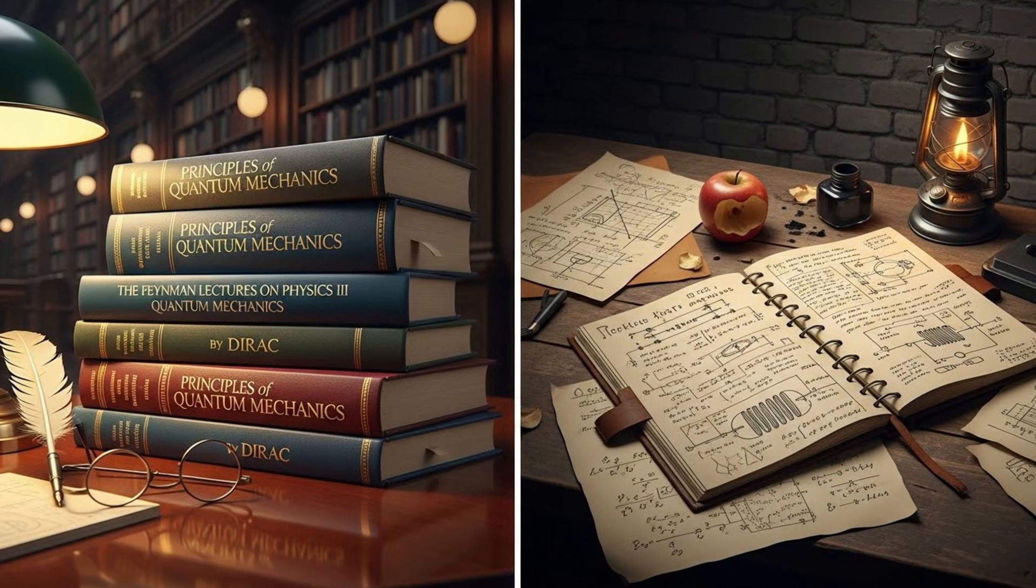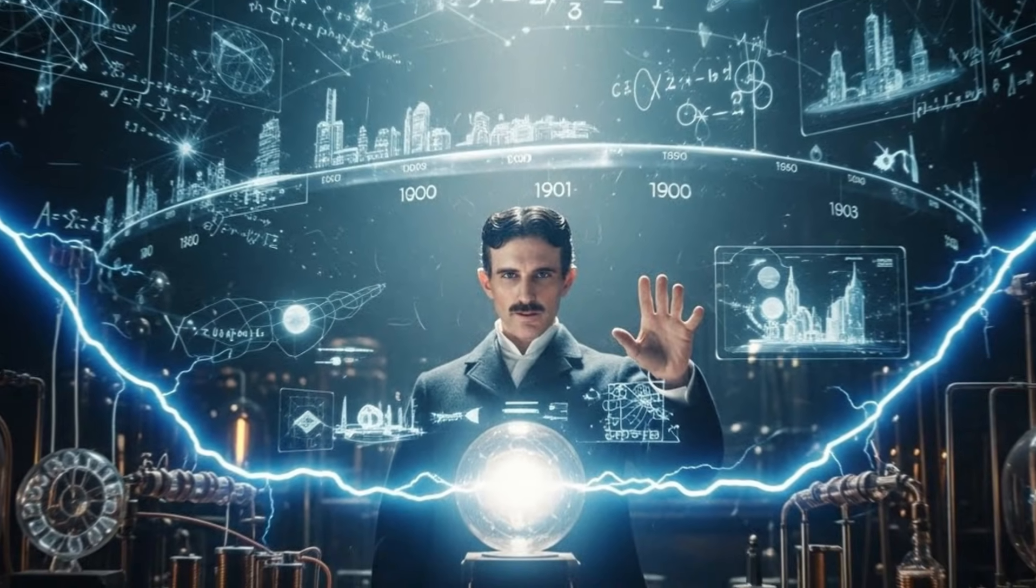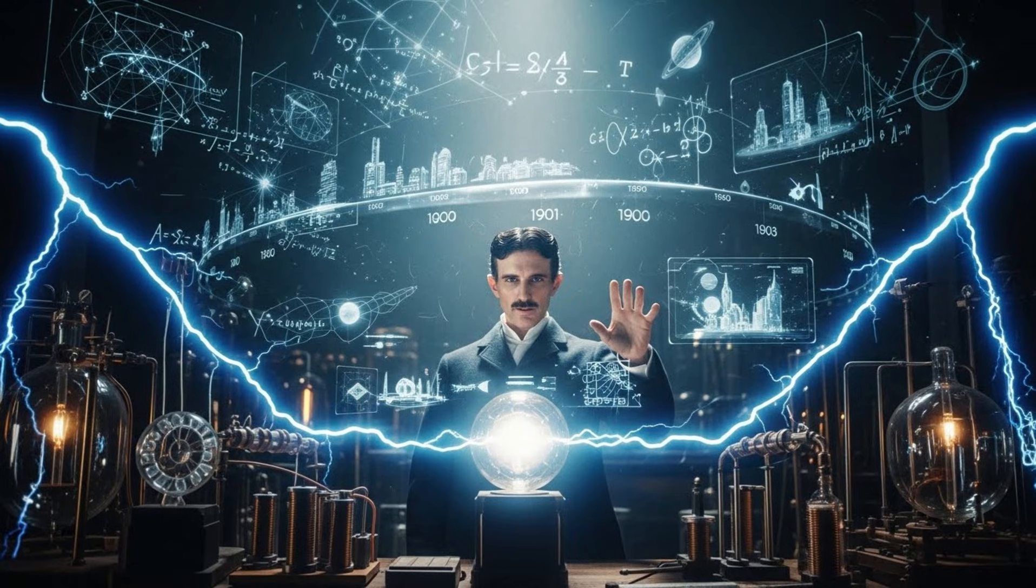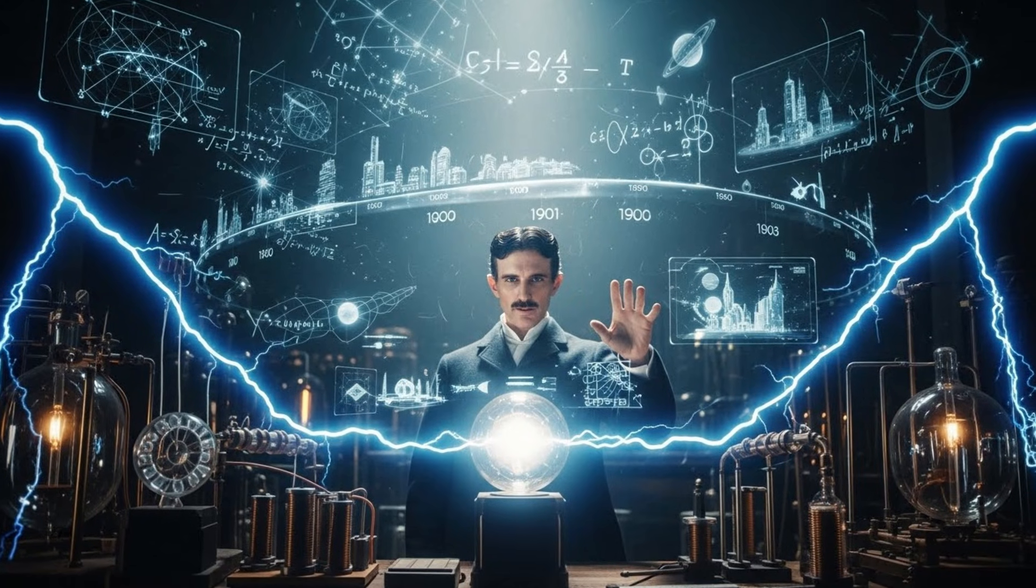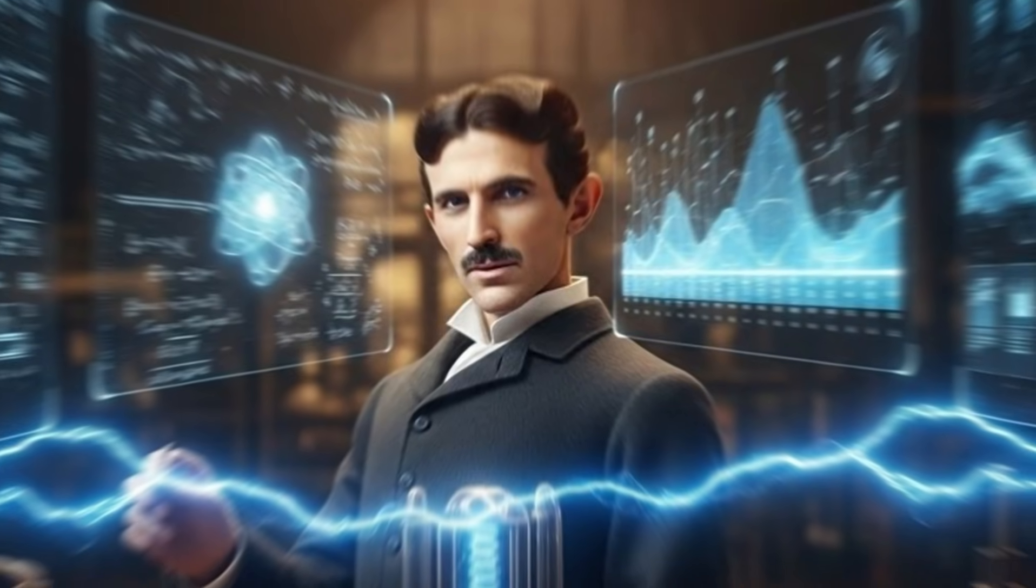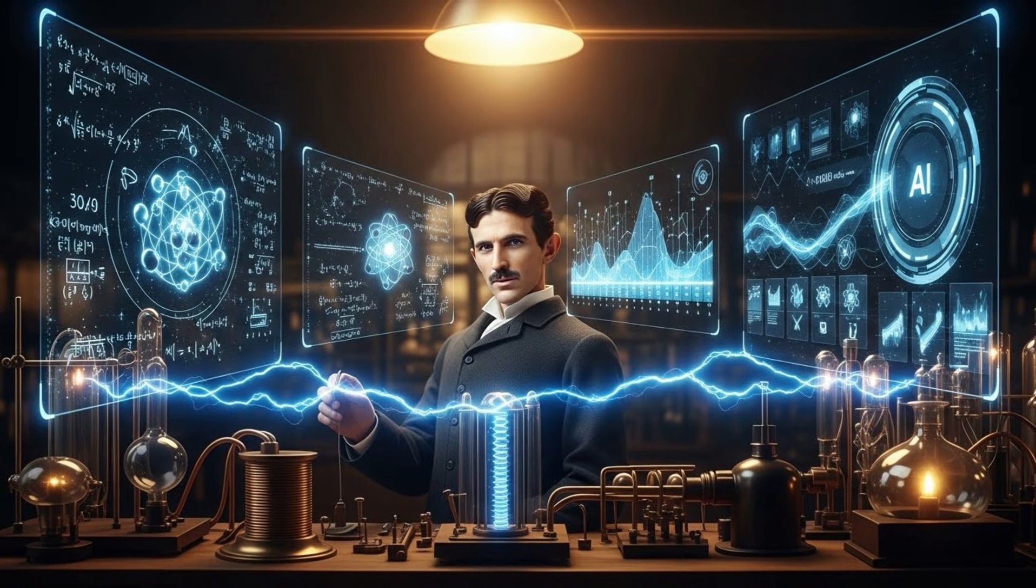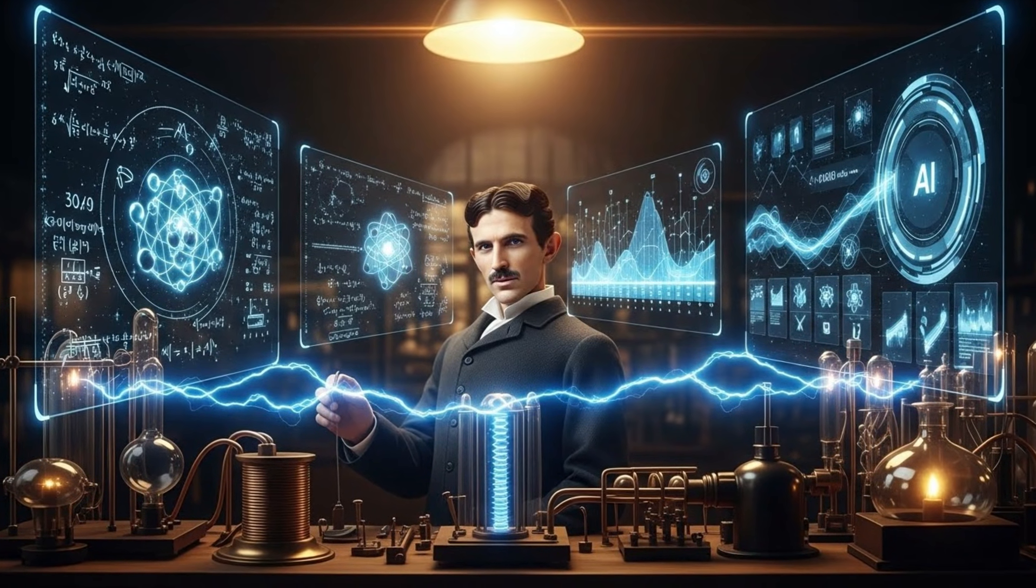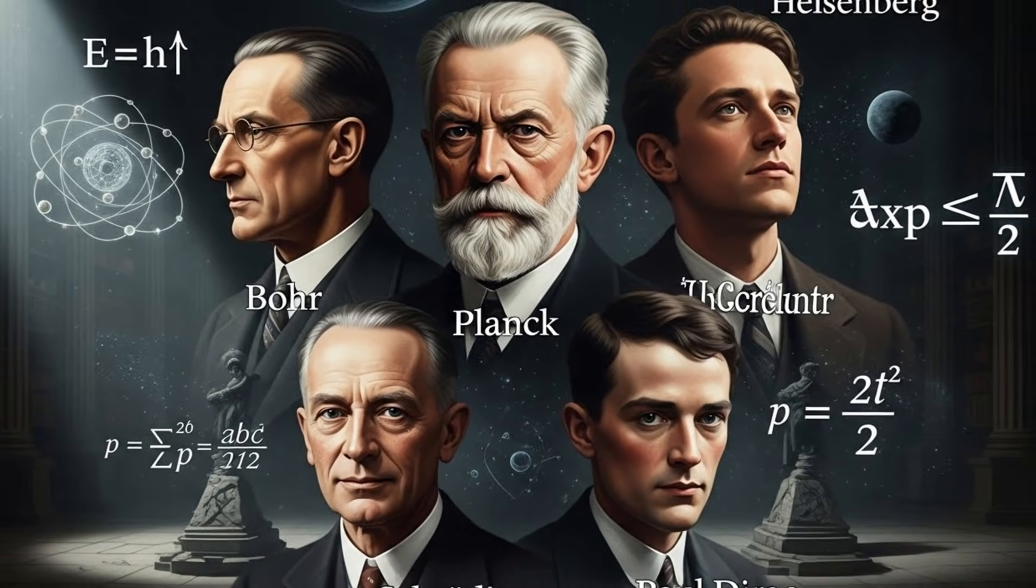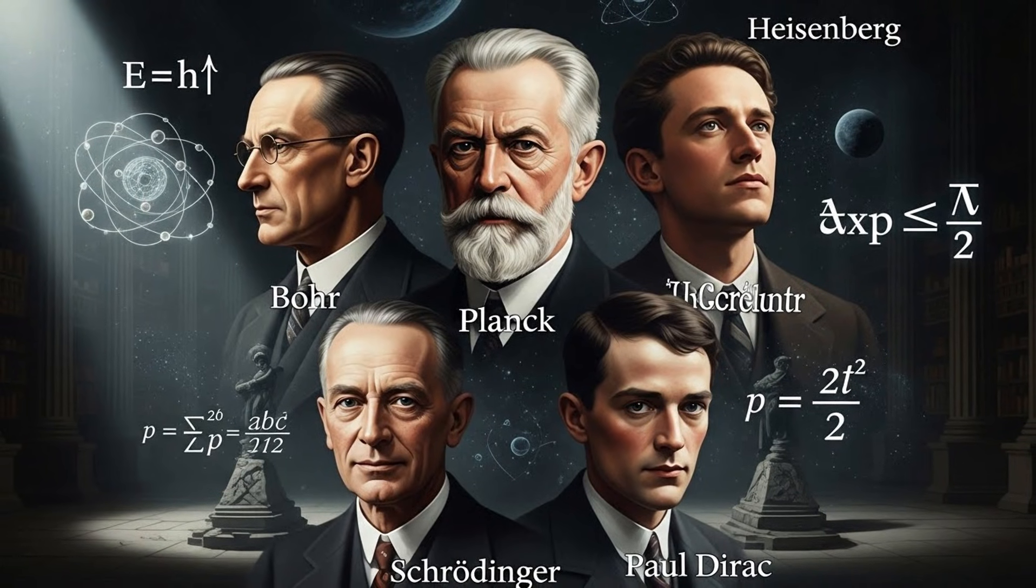But this raises questions we don't yet have answers to. Question 1. If Tesla understood quantum principles well enough to predict nuclear energy yields and describe entanglement dynamics, why didn't he publish? Some historians argue he was protective of his work. Paranoid about theft. Others say he simply didn't care about academic recognition. But there's a third possibility, suggested by the AI's findings. Tesla may not have known how to publish what he'd found. Because his understanding wasn't theoretical. It was experiential. He didn't discover the math and then test it. He observed the phenomena. And then tried to reverse engineer the math.